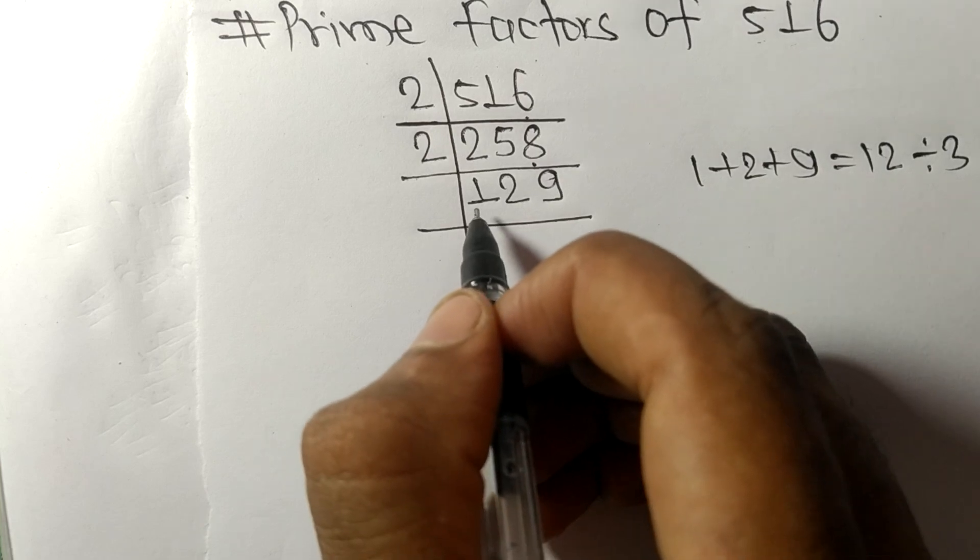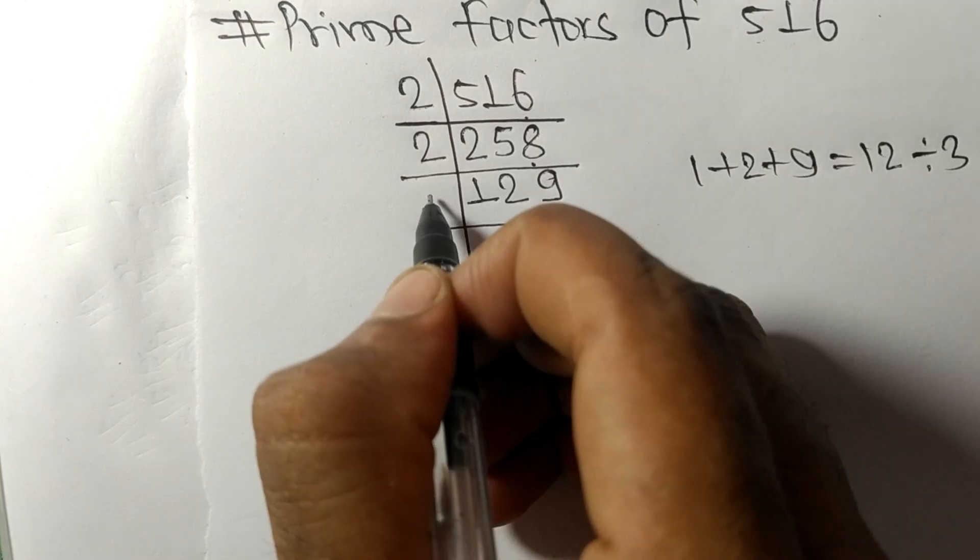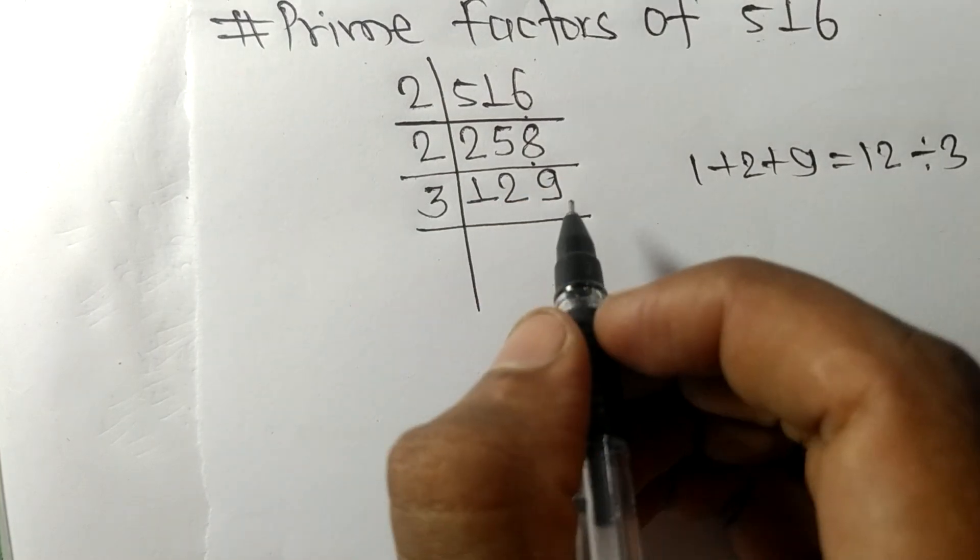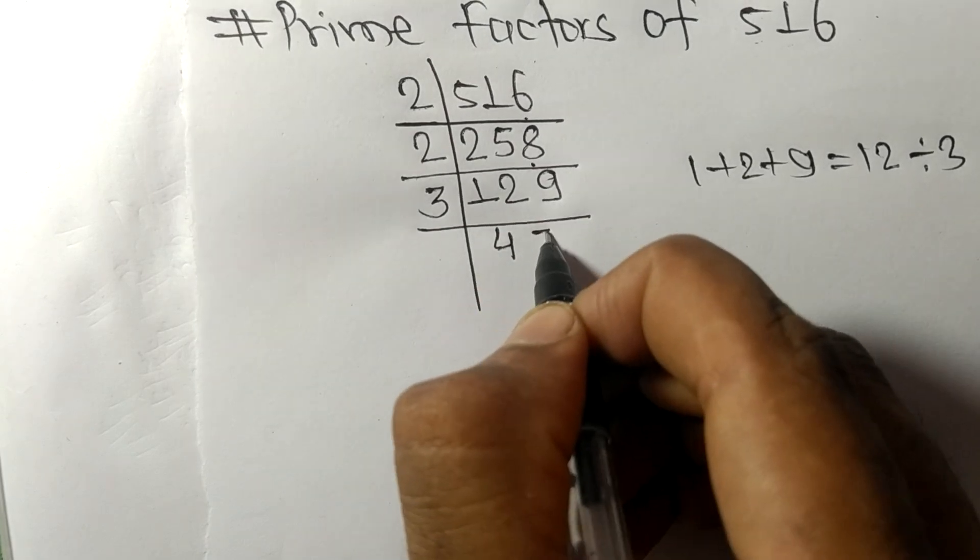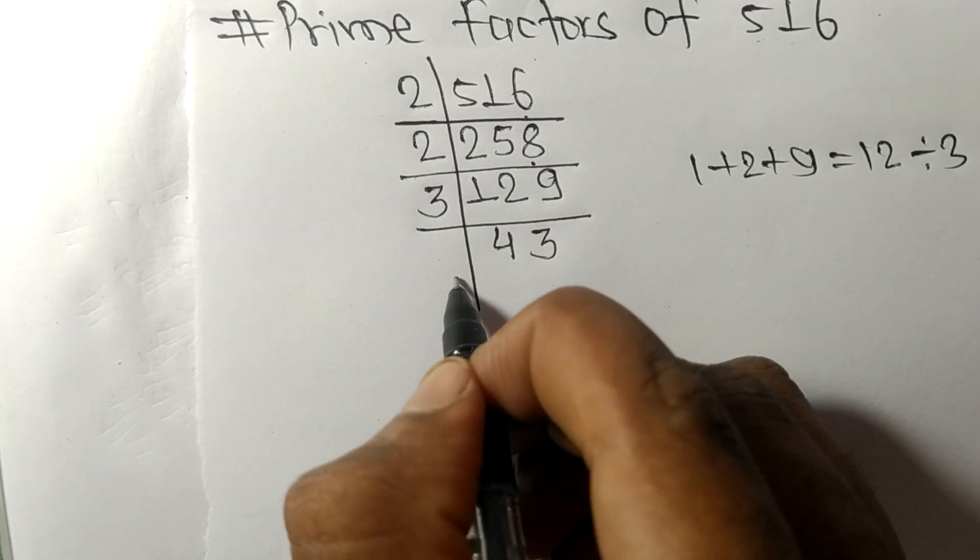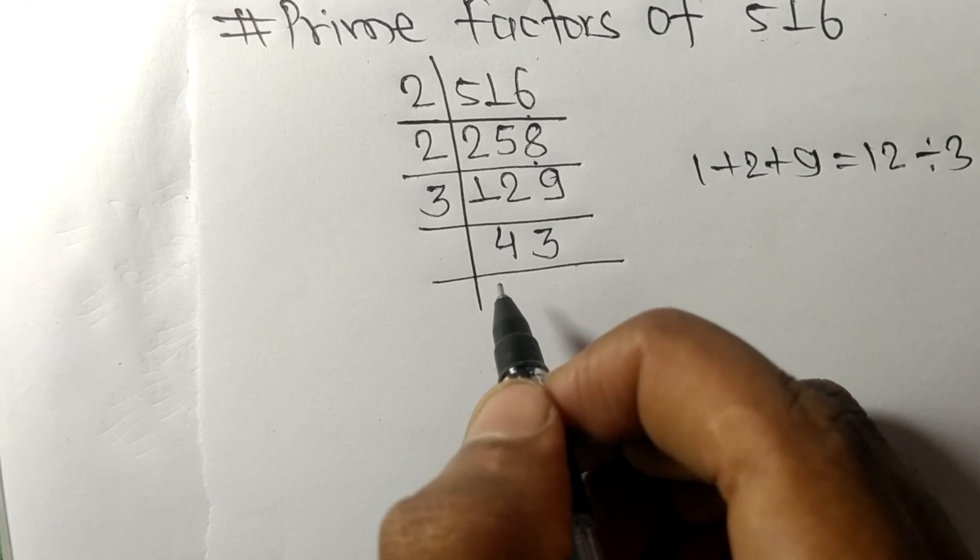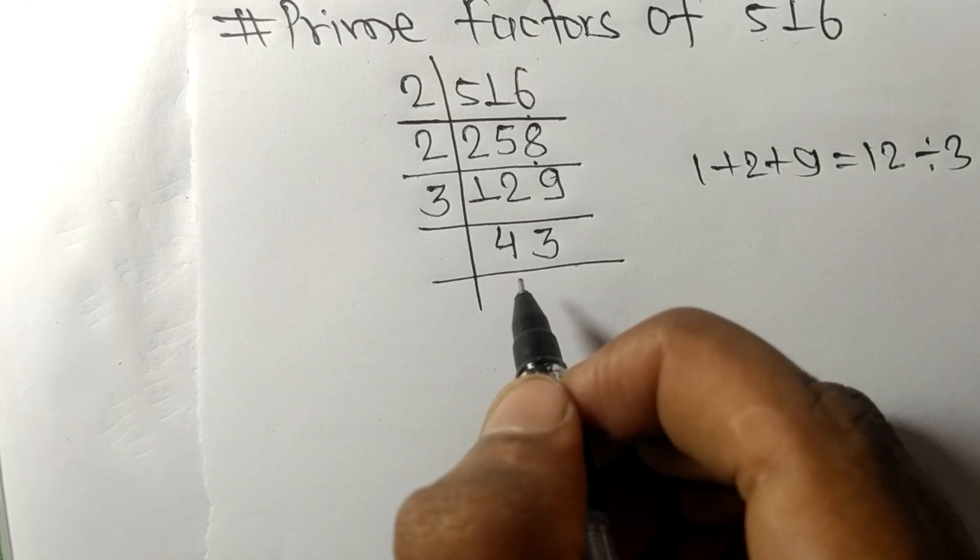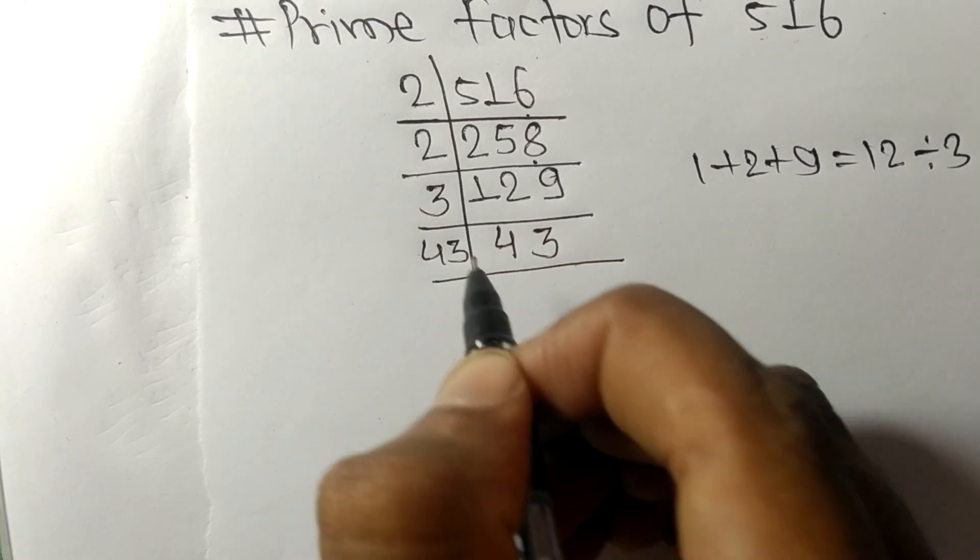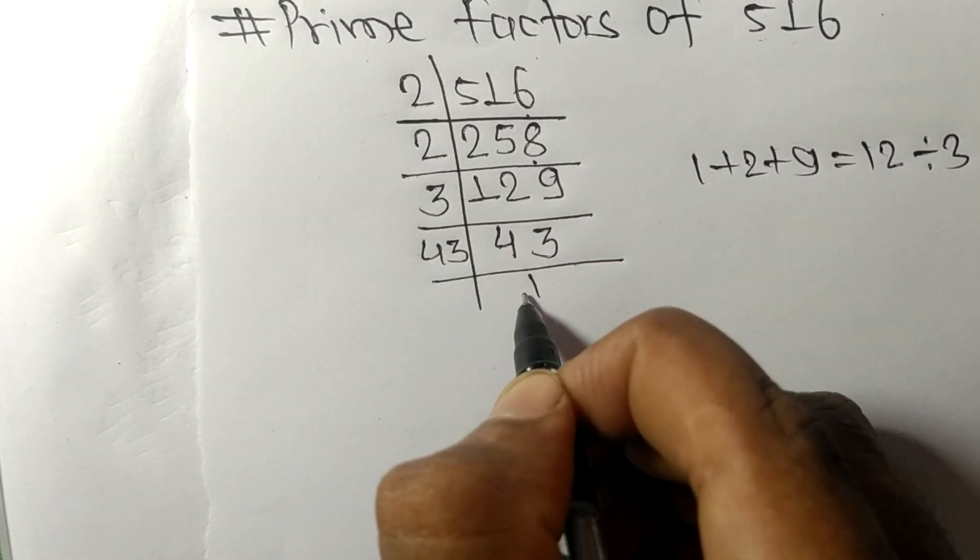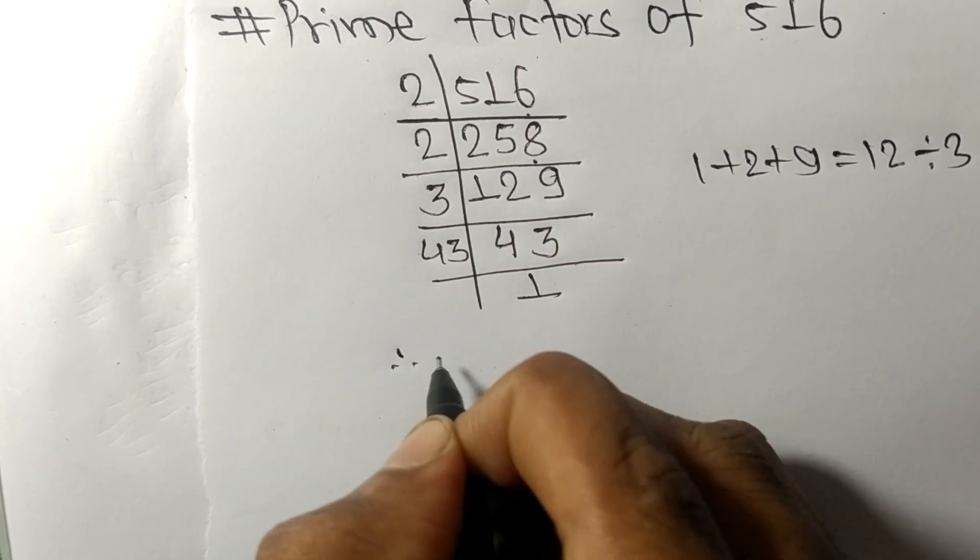Dividing 129 by 3: 3 times 4 means 12, 3 times 3 means 9. Now we got 43, which is a prime number, so it is divisible by 43 itself and we get 1.